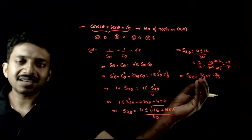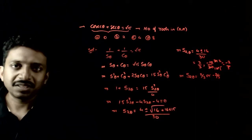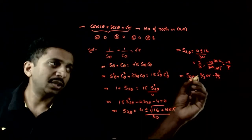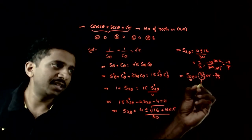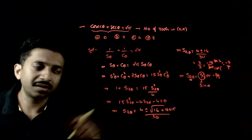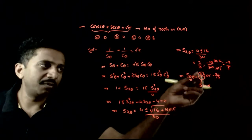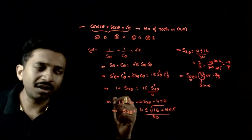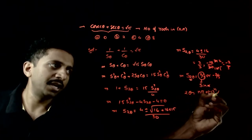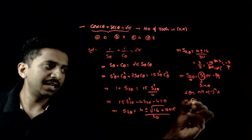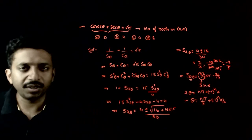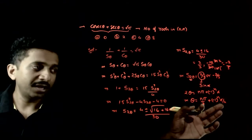These are not nice values, but they are valid values for sin 2 theta, lying between minus 1 and plus 1. For sin 2 theta equals 2 by 3, let 2 by 3 equal sin alpha. Since this is a positive number, alpha lies between 0 and 90 degrees. So 2 theta equals n pi plus minus 1 to the power n times alpha, giving theta equals n pi by 2 plus minus 1 to the power n times alpha by 2.